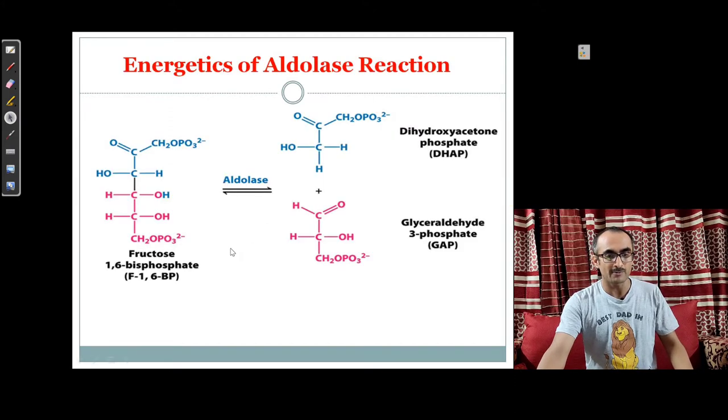Aldolase converts fructose 1,6-bisphosphate to dihydroxyacetone phosphate and glyceraldehyde 3-phosphate.